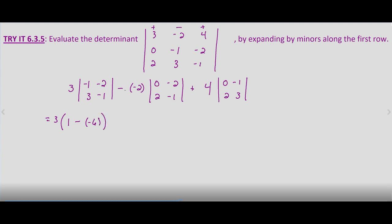Minus negative 2 becomes plus 2, times 0 times negative 1 is 0, minus 2 times negative 2 is negative 4. Plus 4 times 0 times 3 is 0, minus 2 times negative 1 is negative 2.